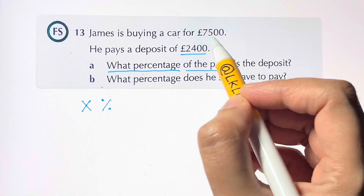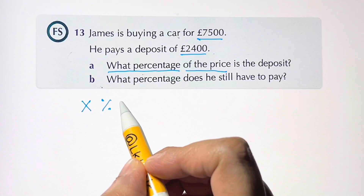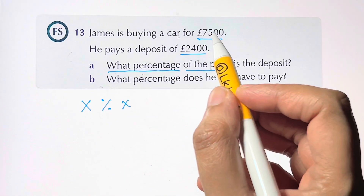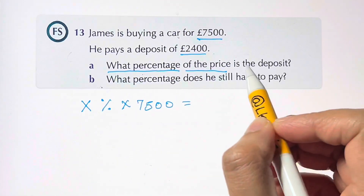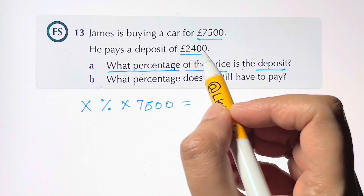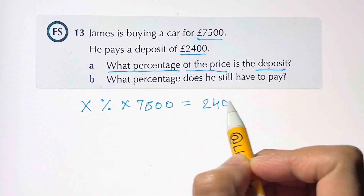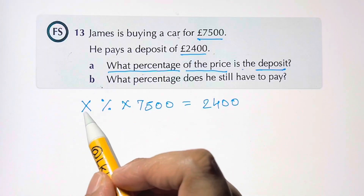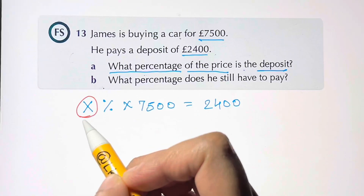The price is seven thousand five hundred, so X percent of seven thousand five hundred equals two thousand four hundred. That's how you form the equation — now we just need to find the value of X.